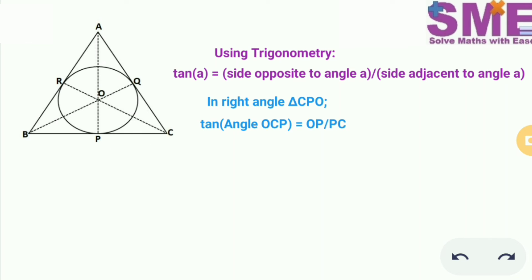As per symmetry this line CPO will bisect equally the angle PCQ and we know that it is an equilateral triangle. So angle PCQ is 60 degree. So angle OCP will be equal to 30 degree.